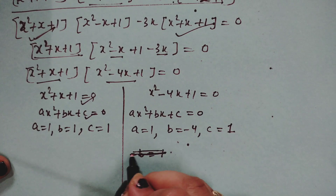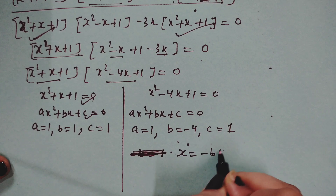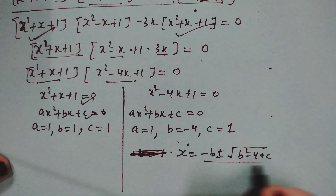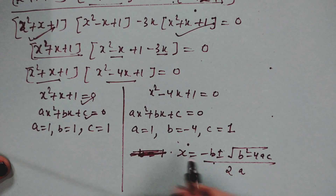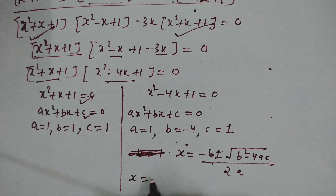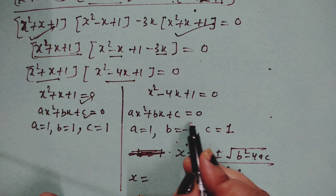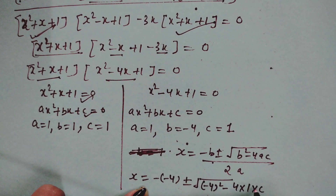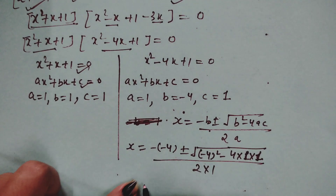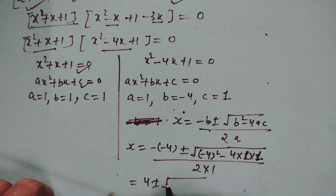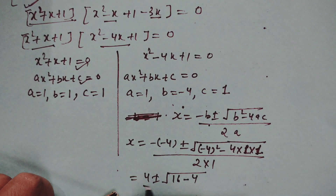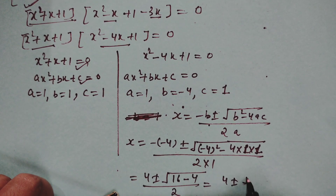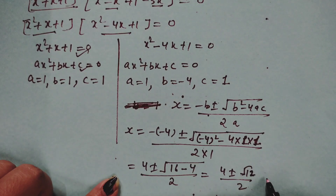For x² − 4x + 1 = 0: a = 1, b = −4, c = 1. Applying the formula: x = (−(−4) ± √((−4)² − 4·1·1)) / (2·1) = (4 ± √(16 − 4)) / 2 = (4 ± √12) / 2.